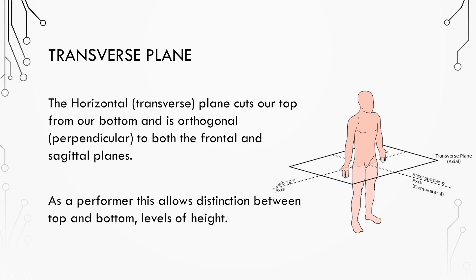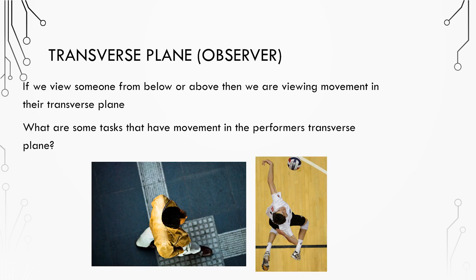As a performer, this allows you to distinguish between levels of height, and as a coach, if you view someone from below or above, then you're viewing movement in the transverse plane. This is great for viewing movements involving rotation tasks, such as a ballet pirouette, a volleyball spike, or shooting an arrow from a bow.